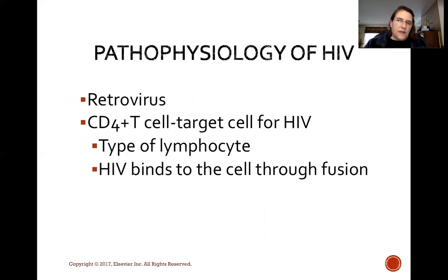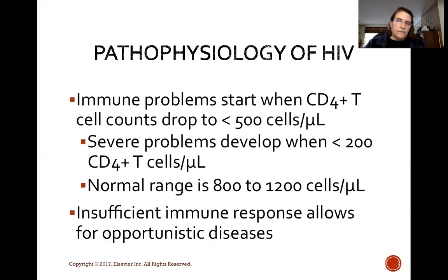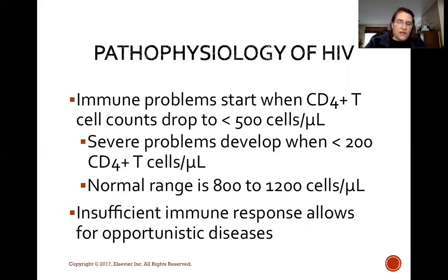The pathophysiology of HIV: it is a retrovirus that targets the CD4+ T cell, a type of lymphocyte. HIV binds to the cell through fusion. The immune problem starts when the CD4+ T cell count drops below 500 cells. Severe problems start when the count drops below 200 — a normal range is 800 to 1,200. Insufficient immune responses allow for opportunistic diseases, and that's when the patient runs into serious trouble.